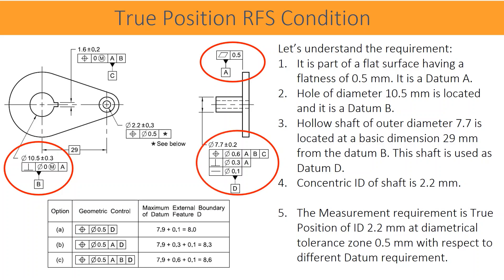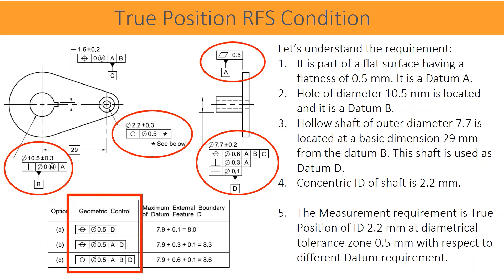The hollow shaft is used as datum D. The concentric inner diameter (ID) of the shaft is 2.2 millimeters. The measurement requirement is true position of ID 2.2 millimeters at a diametrical tolerance zone of 0.5 millimeters with respect to different datum requirements.